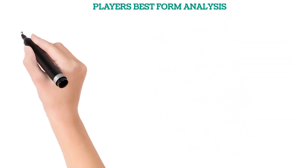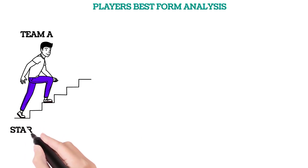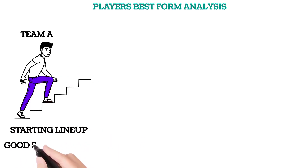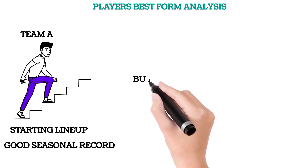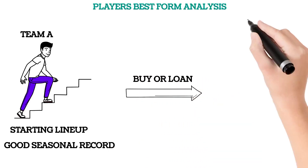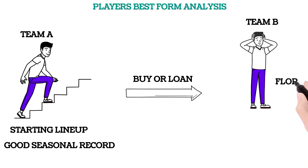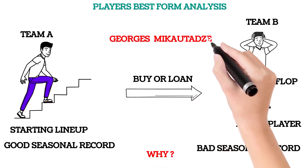Player-based form analysis. Let's consider this: a Team A player starts in the lineup and has a good seasonal record, which leads Team B to buy or loan this player. When he gets to Team B, he becomes a flop — a big problem. So he stays on the bench, having a bad seasonal record. Why is this happening in football players?